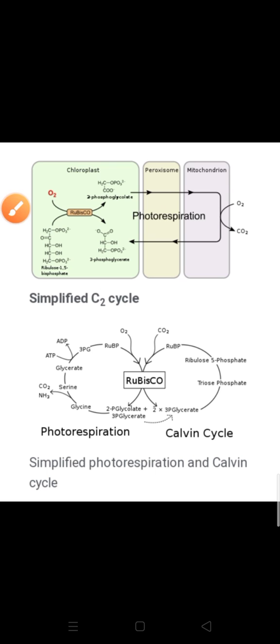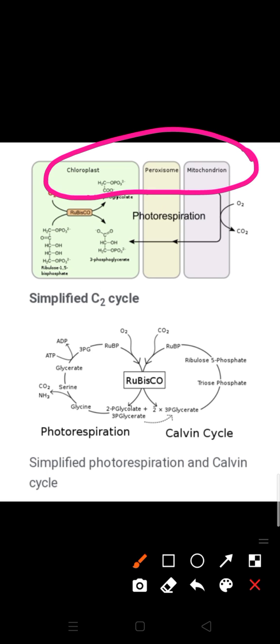In photorespiration — as you can see on your screen — chloroplast, peroxisome, and mitochondria are the three cell organelles responsible. In C3 plants, some O2 binds to rubisco and CO2 fixation is decreased. RuBP, instead of being converted to two molecules of PGA, binds with O2 to form one molecule of phosphoglycolate. This pathway is called photorespiration because of the fixation of rubisco with oxygen.